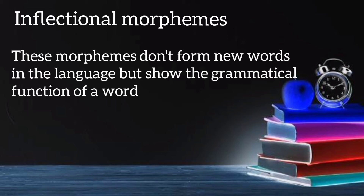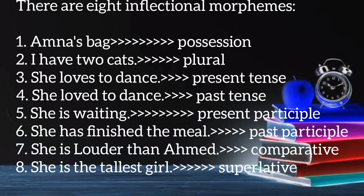Inflectional morphemes don't form new words in the language but show the grammatical function of a word. There are eight inflectional morphemes in total. Number one: possession — in 'Amna's bag', the apostrophe-s is an inflectional morpheme. Number two: plural — in 'I have two cats', the plural 's' at the end of 'cat'. Number three: present tense — in 'she loves to dance', the use of present tense 's'.